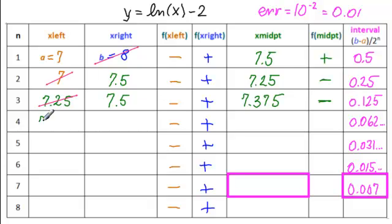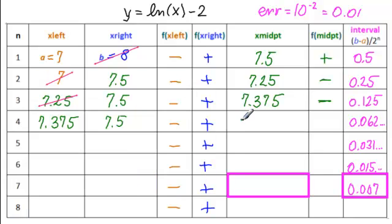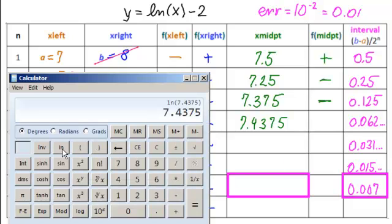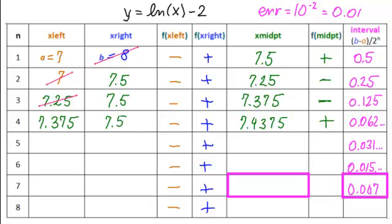We have 7.375 here, 7.5 here. We're ready to look for our new midpoint. 7.375 plus 7.5 equals, divided by 2 equals 7.4375. I'm writing down all the decimals here. Now I need to know the sign of the function value, so ln of that minus 2 equals. That's positive, so now we're replacing the right-hand side.